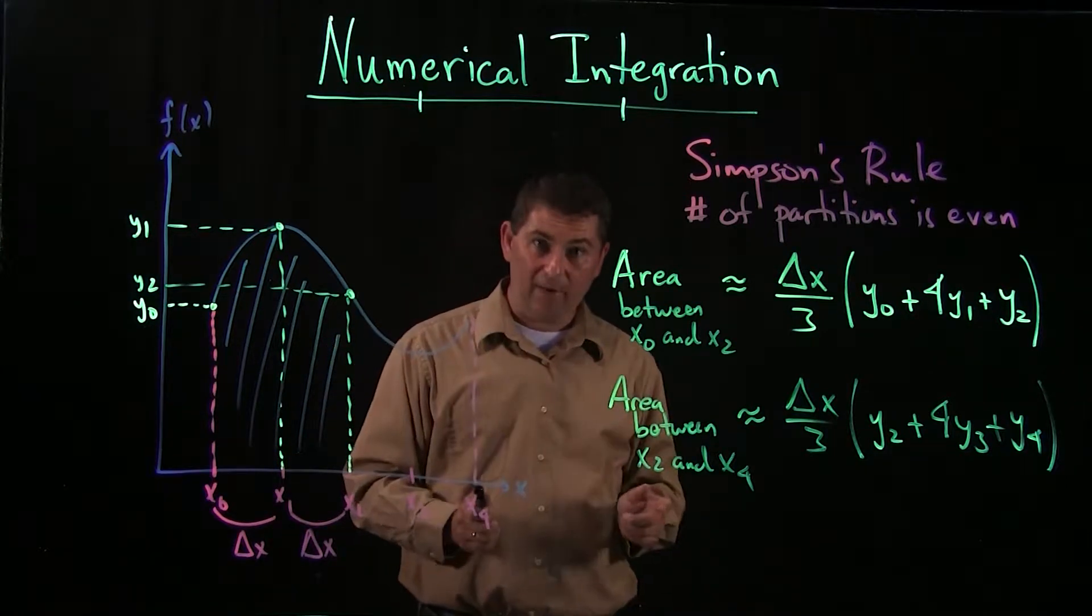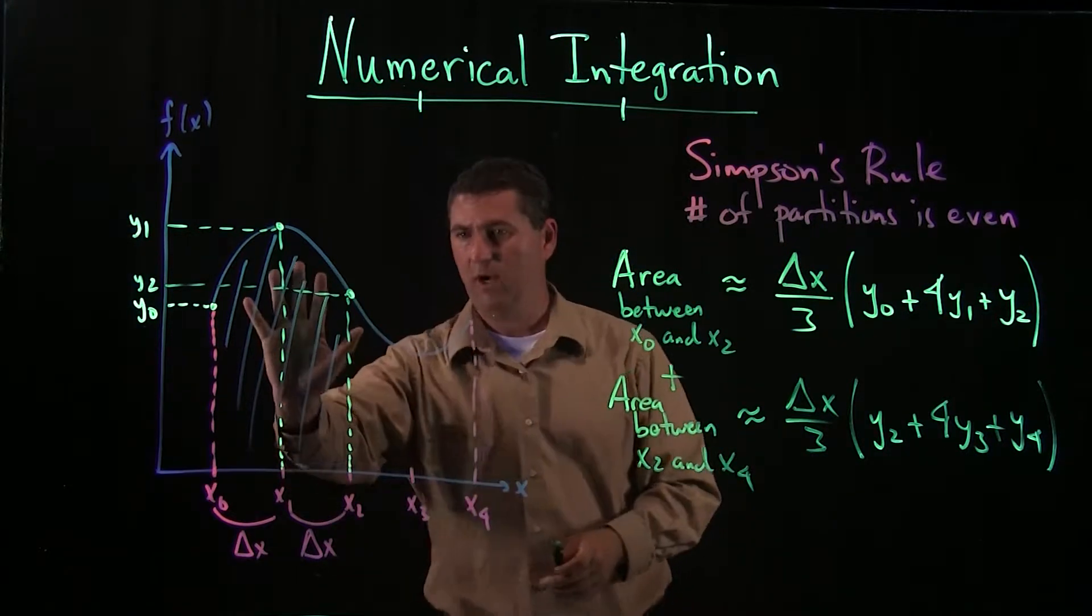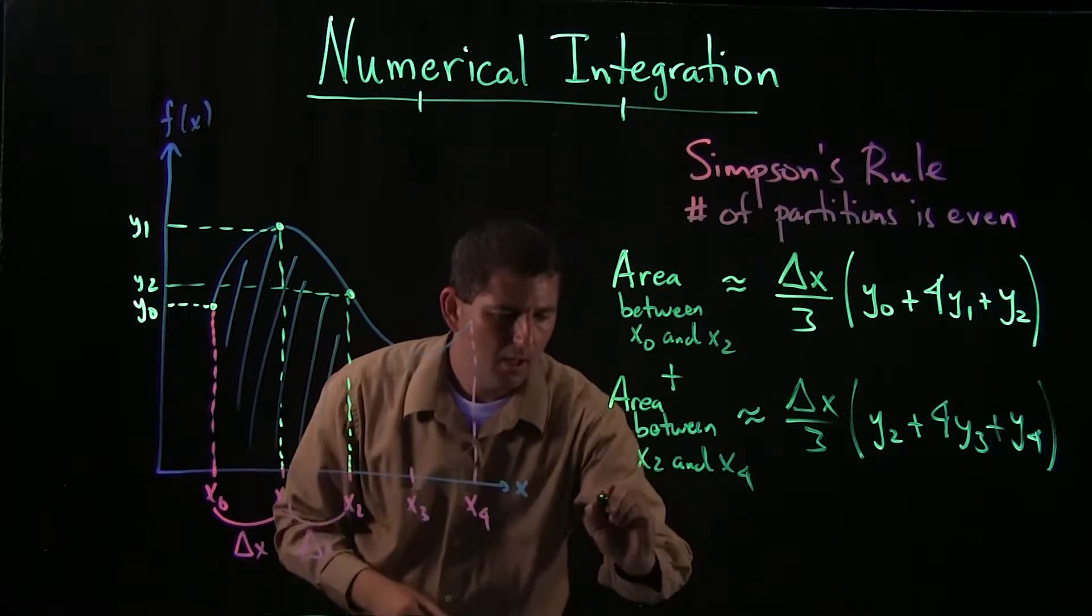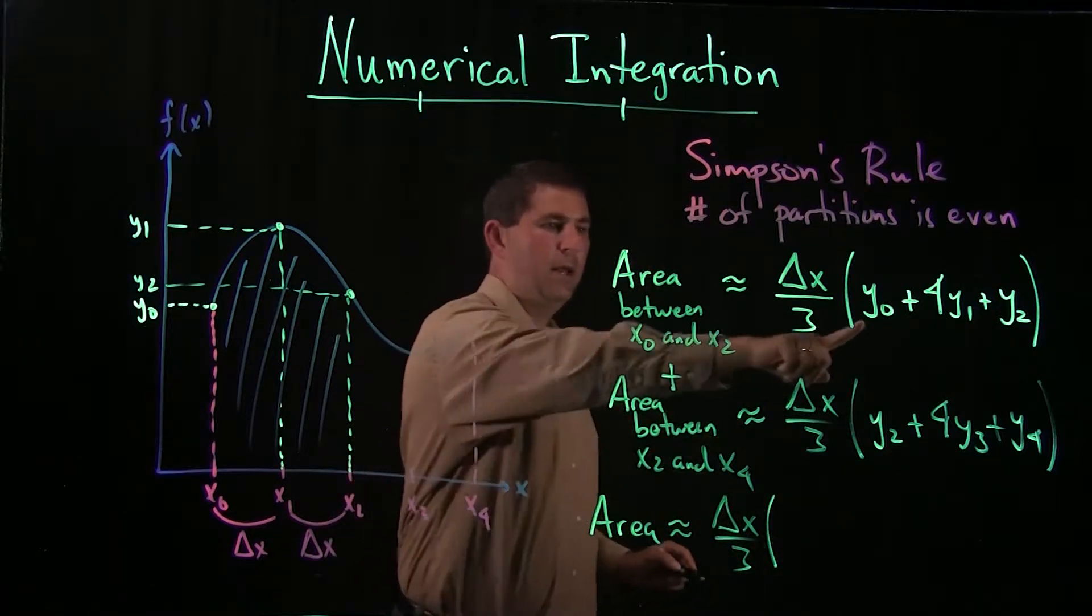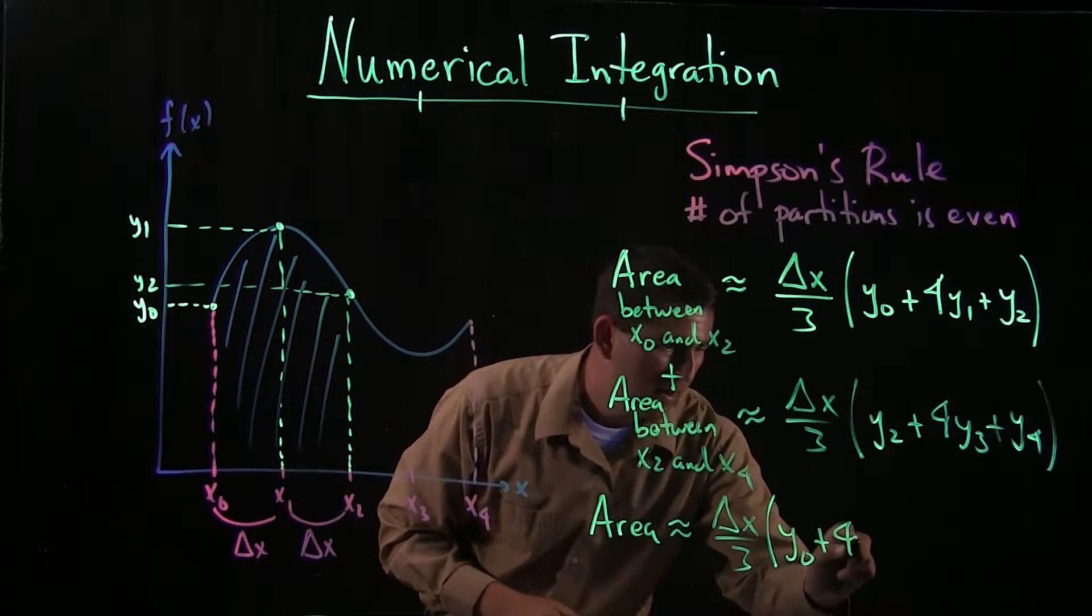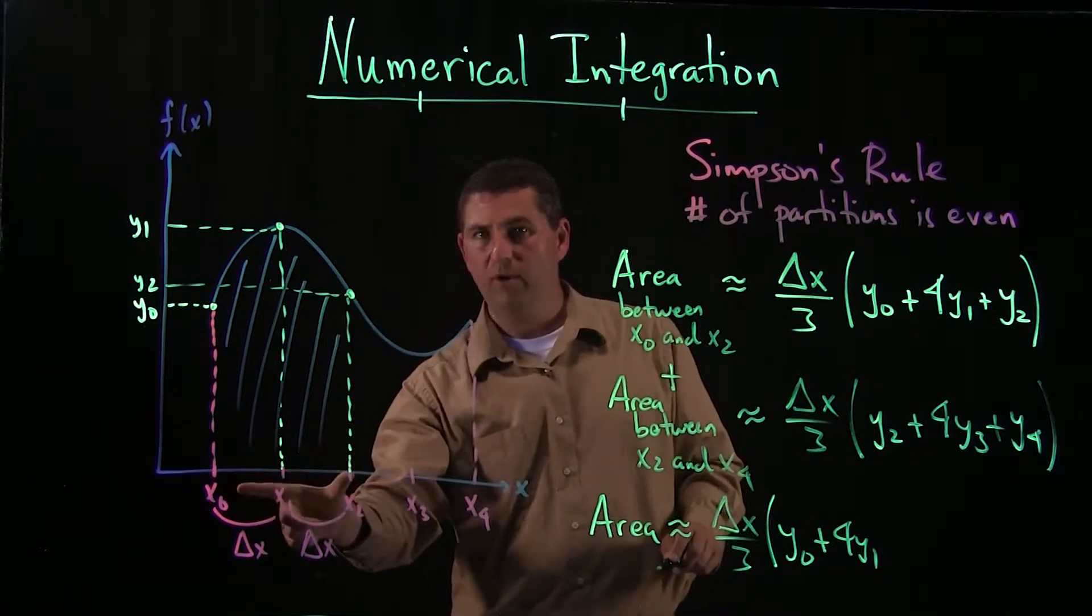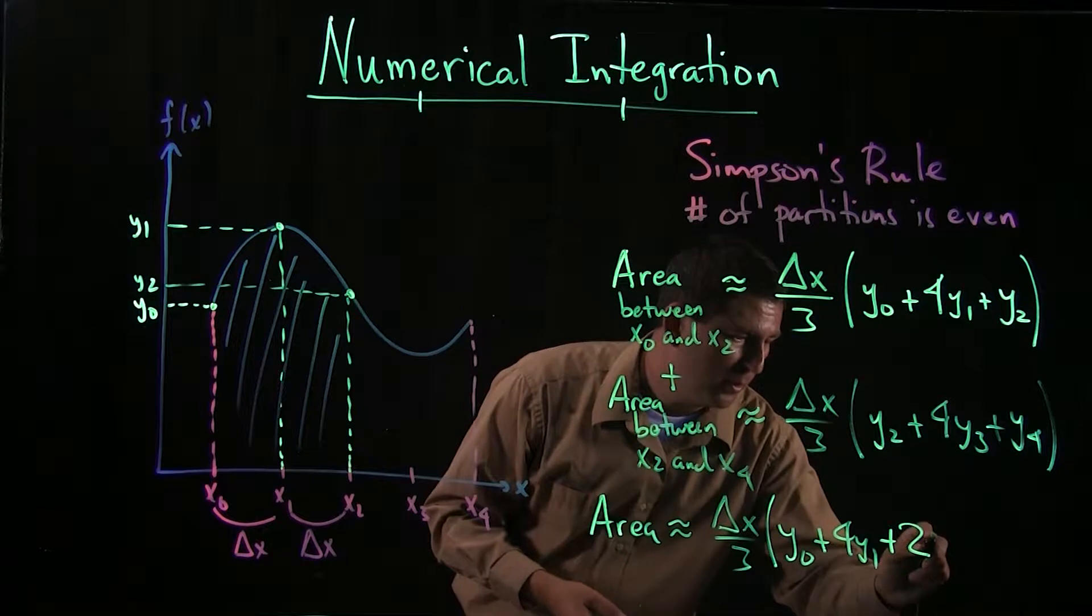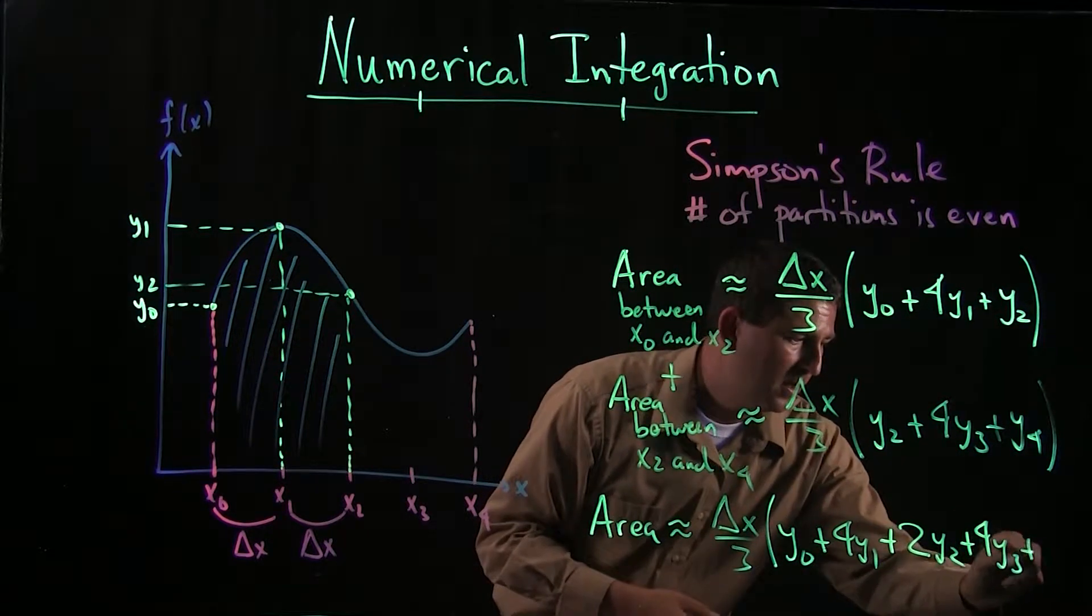Now when I put these together, the delta x over three is in both of them. So why do I want to add these together? Well, because I want to get this area plus this area. So I add these. When I add these together, the delta x over three is going to pull out. So delta x over three. Now the y0, that just occurs one time. The four y1 is there, but there's this y2. This y2 occurs both as the right endpoint of this partition and as the left endpoint of this partition. It's going to occur twice. So I get to put a 2y2 in here. And now I fill out the rest, which only occur once, a 4y3 and a y4.